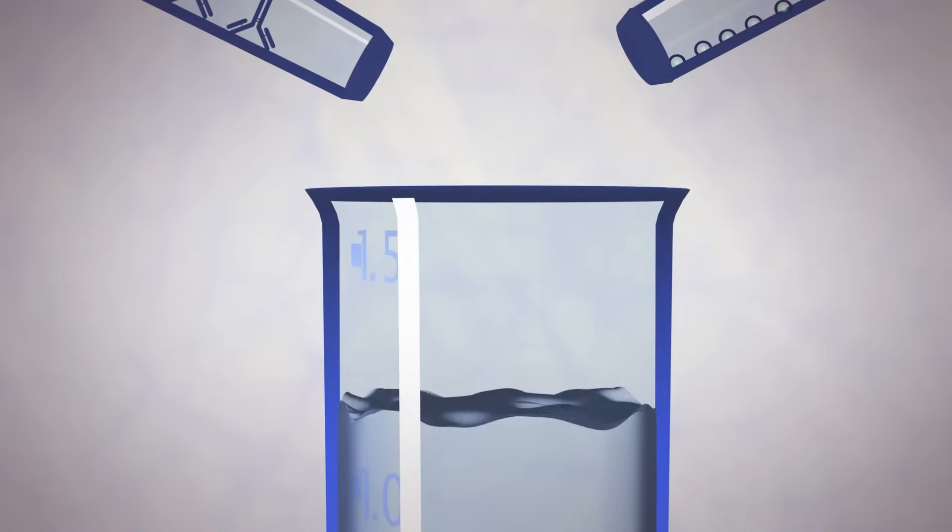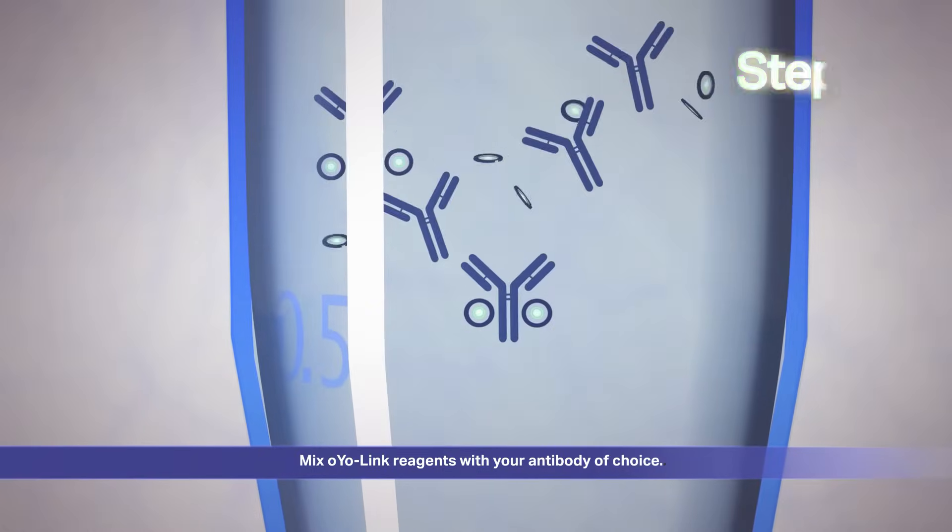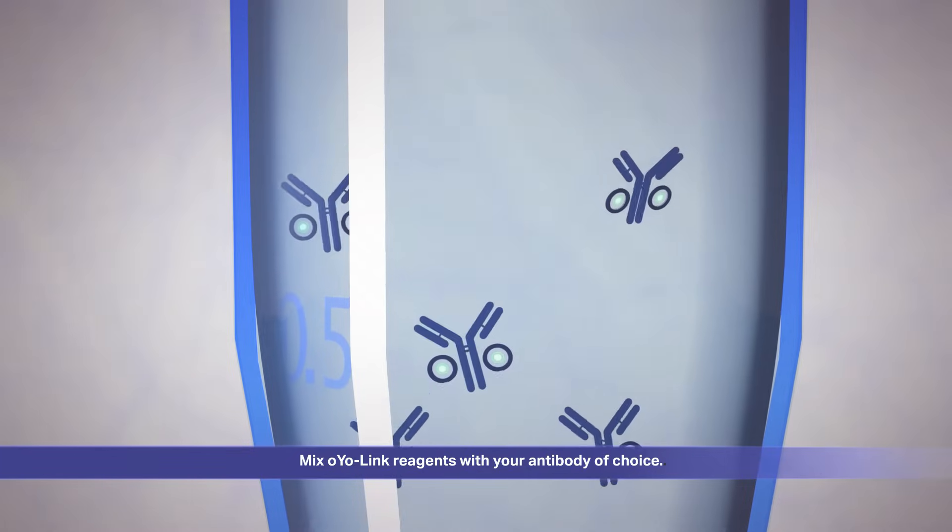Antibody labeling with OyoLink products requires just two steps. First, mix the OyoLink labeling reagent with your antibody of choice, and OyoLink will bind to the heavy chain with high affinity.